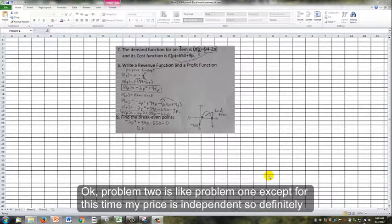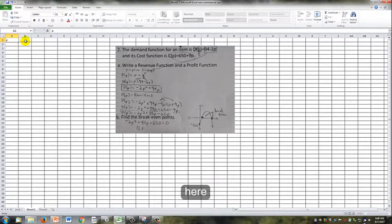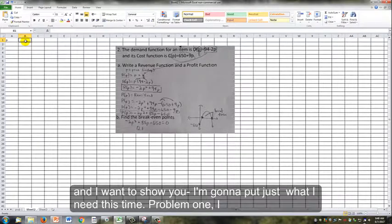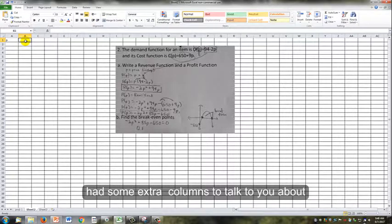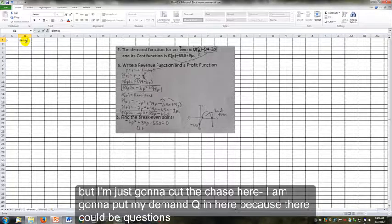Problem 2 is like problem 1, except this time my price is independent, so definitely want to think about that. Price is going to be here. I'm going to put just what I need this time. Problem 1, I had some extra columns to talk to you about what Excel can do. But I'm just going to cut to the chase here.